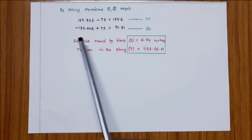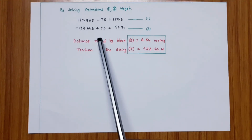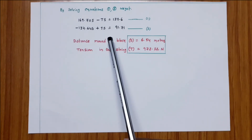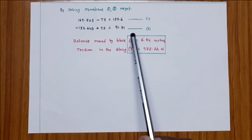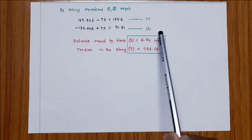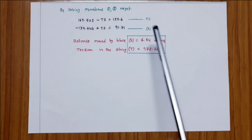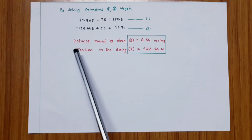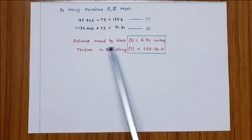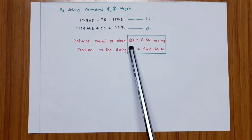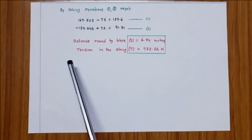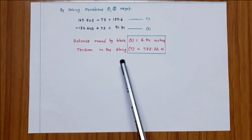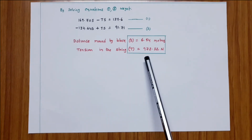By solving the two equations, the distance moved by the block is S equals 6.54 meters, and the tension in the string is T equals 972.2 Newtons.